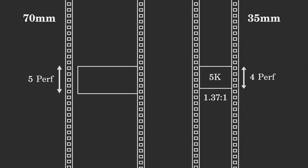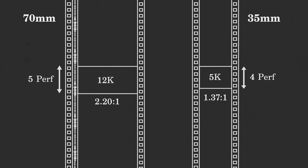70mm film is 5 perforations high and 70mm across. 65mm is for the image, with the extra 5mm being used for 6 high quality sound channels. It has an aspect ratio of 2.2 by 1, and a theoretical resolution of approximately 12K, slightly more than double that of 35mm film.